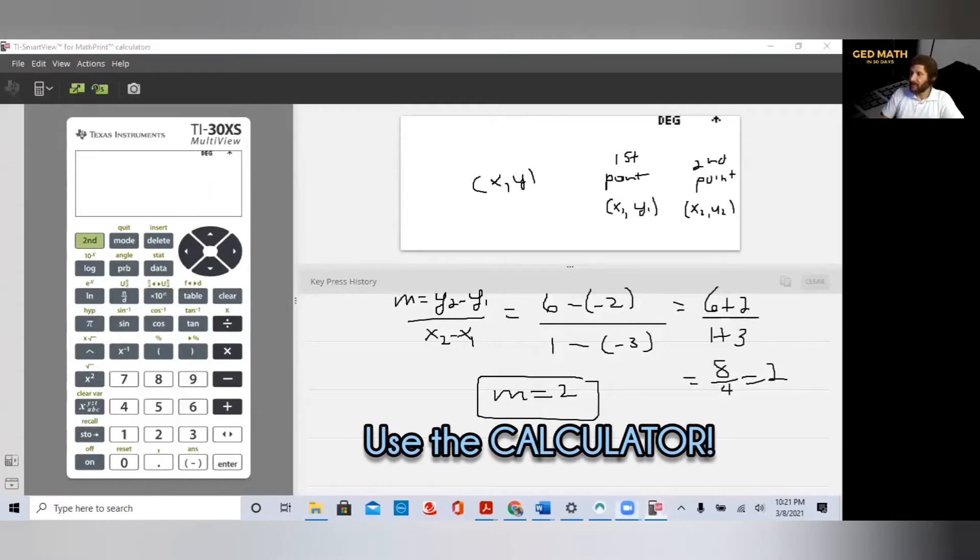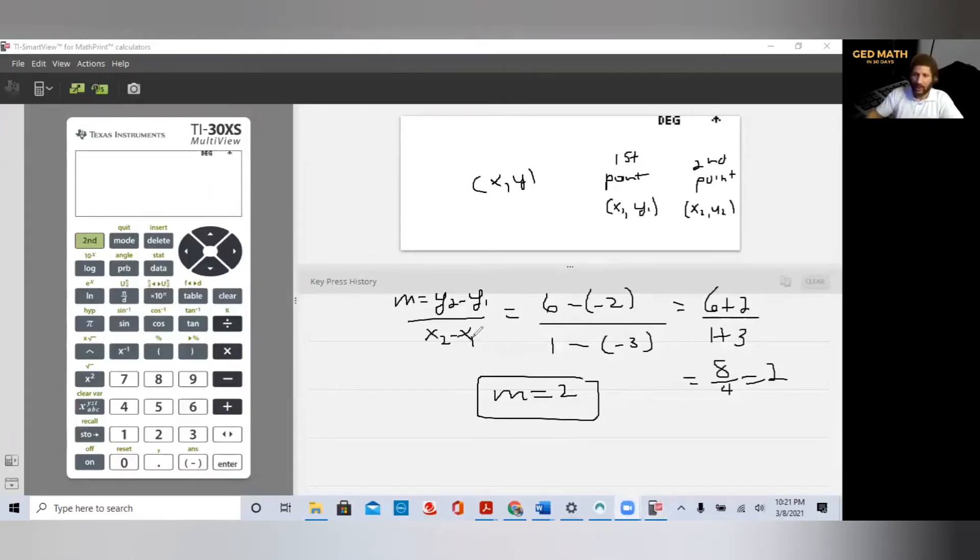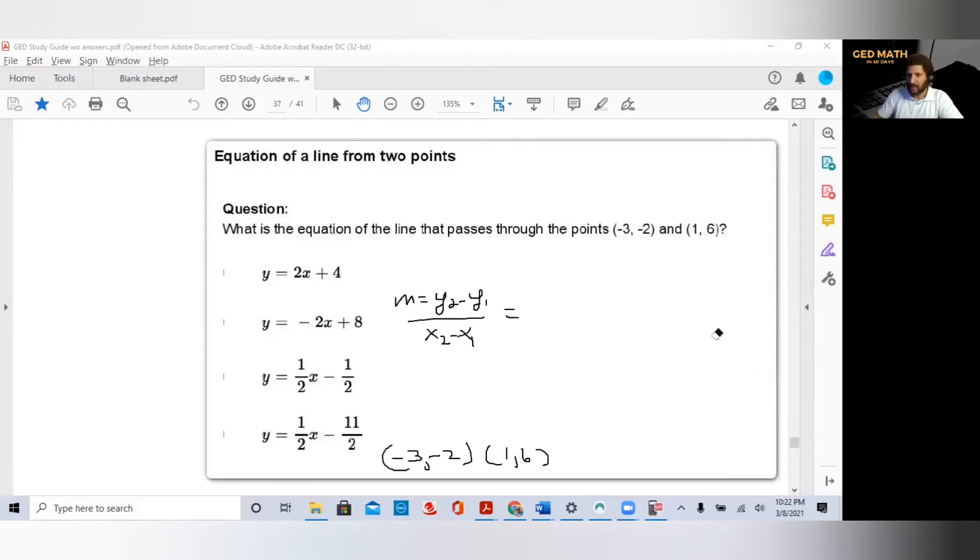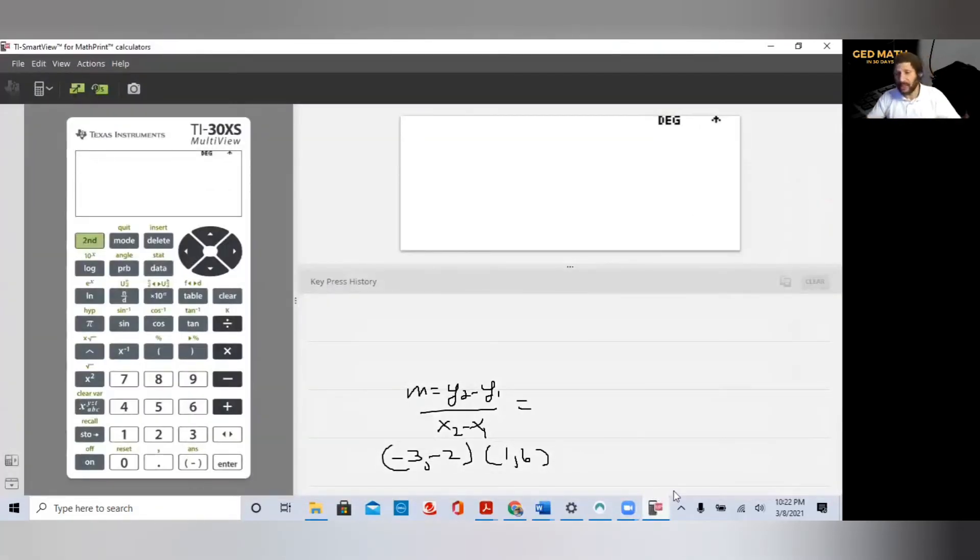Let me open up the calculator. Our points are minus 3, minus 2, and 1 comma 6. I'm going to move this formula down to the bottom so when we open up the calculator we can see everything clearly. So you won't make mistakes, I'm going to show you how to use the calculator.